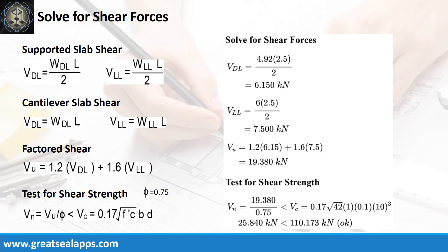The shear force from dead load is 6.15 kN, and live load is 7.5 kN for a factored shear force of 19.38 kN. The nominal shear force is 25.84 kN, less than 110.173 kN concrete capacity.